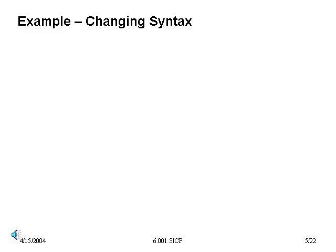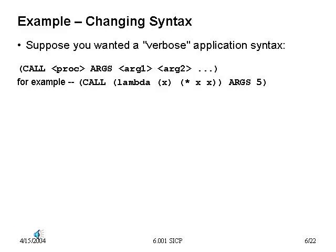One of the reasons for using data abstractions everywhere within eval is to let us separate out the syntax from the semantics. Eval and apply define the semantics — how expressions get their values. The syntax tells us how to write legal expressions. By doing that separation, we can make changes to the syntax without affecting the semantics. Here's one example: suppose I decide, rather than having the operator be the first sub-expression, I'd like to be much more verbose — having expressions that say 'call this procedure on arguments of this form,' like call plus args 2 3 5. How would I allow this kind of more verbose syntax in my language?